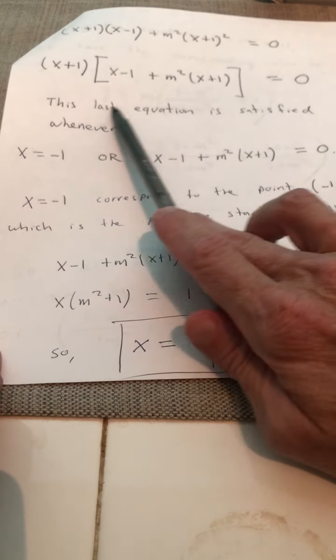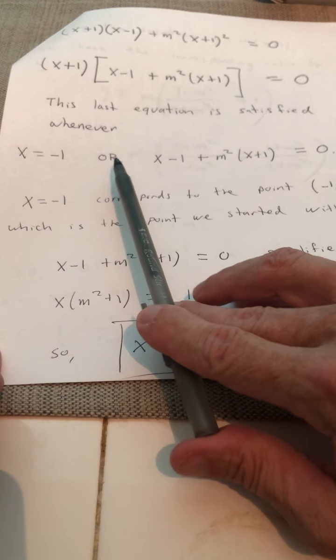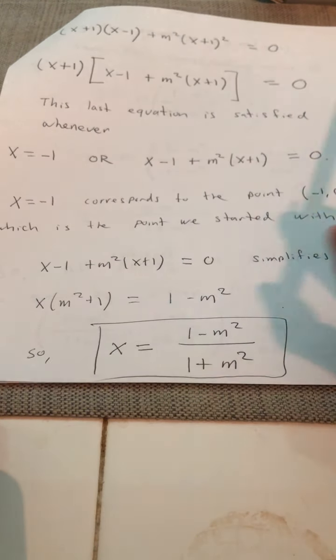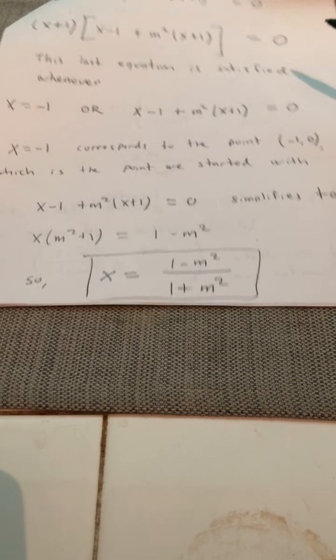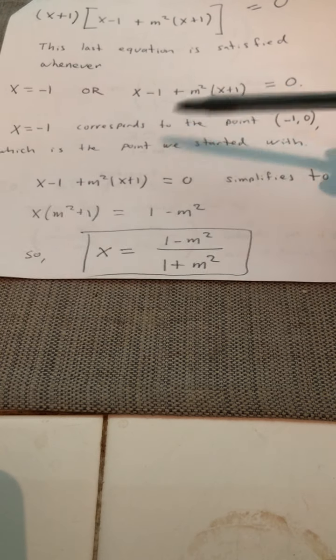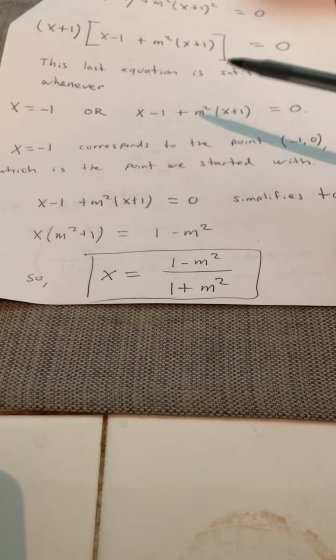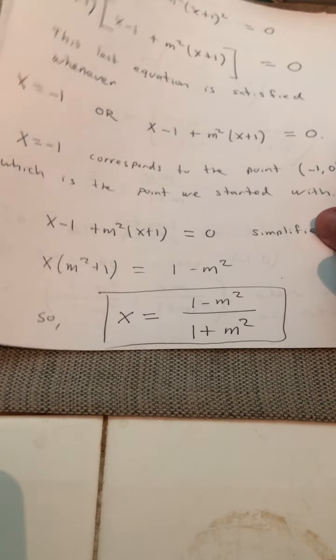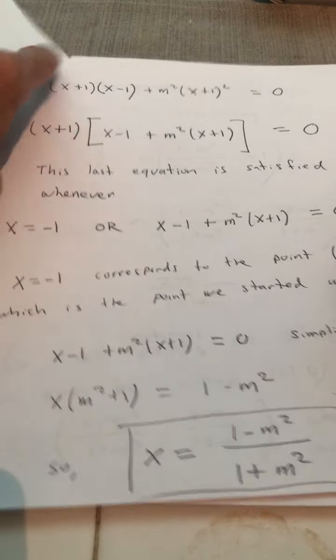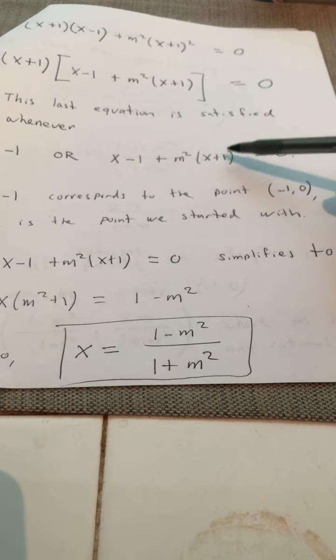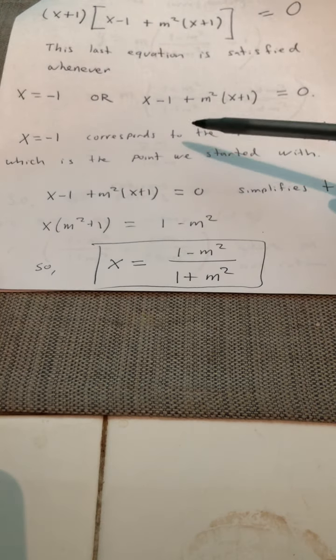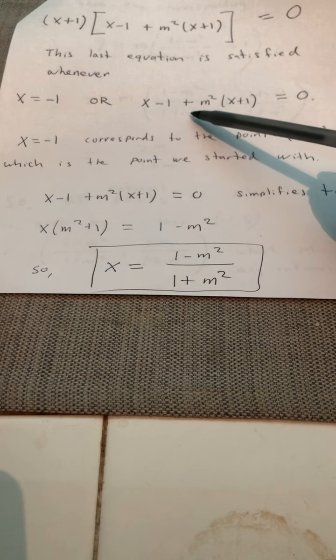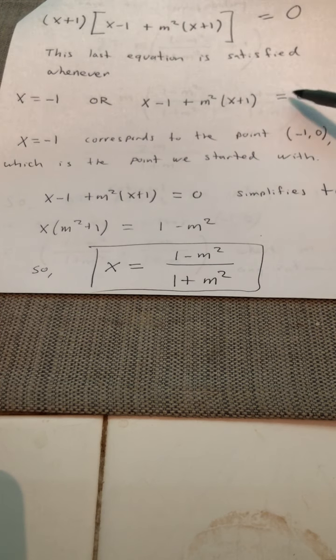So this equation is satisfied whenever, using the zero product rule, x is equal to negative one or if this quantity in the bracket is equal to zero. Now x equals negative one, that was our original point that we started with. We already knew that. That confirms something we already knew. So to get the x coordinate of this other point, what we have to do is we have to solve this other equation for x.